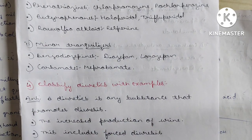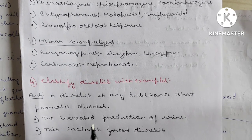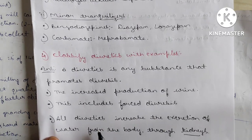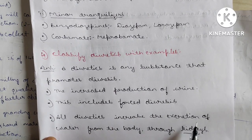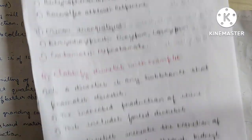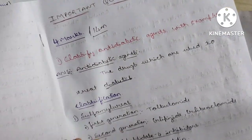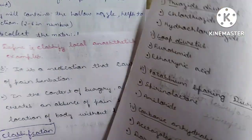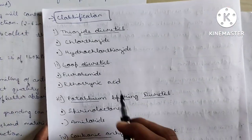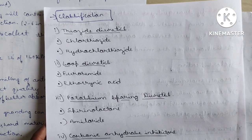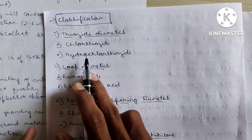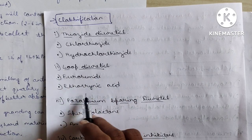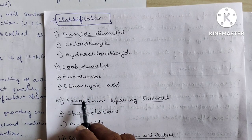Question 4: Classify diuretics. A diuretic is a substance that promotes diuresis — increased urination and increased production of urine. All diuretics increase the excretion of water from the body through the kidneys. Classification: Thiazide diuretics — chlorothiazide, hydrochlorothiazide. Loop diuretics — furosemide, ethacrynic acid.